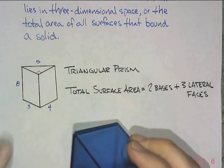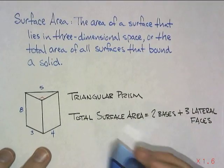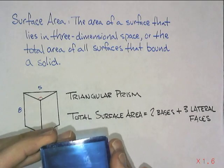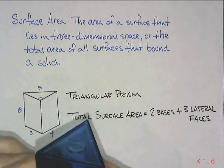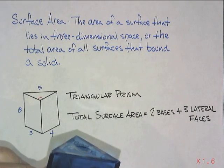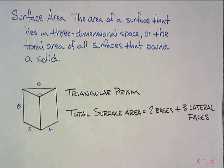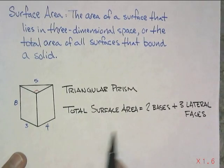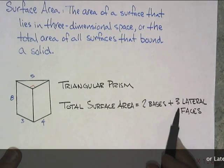So when we figure out the surface area, we're figuring out the area of everything that we would take to cover our prism or polyhedron. In our example right here, we have a triangular prism and it's a right triangle, a 3-4-5. The total surface area is made up of the two bases and the three lateral faces.